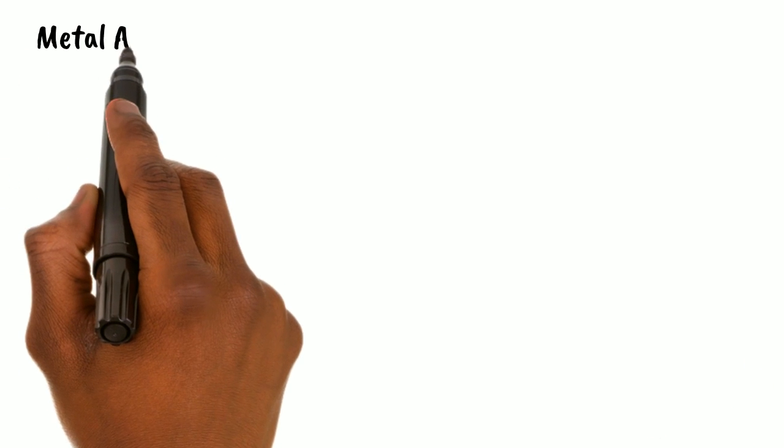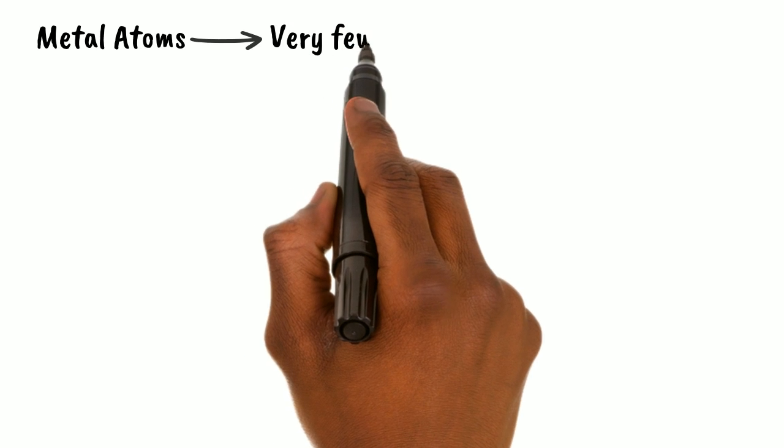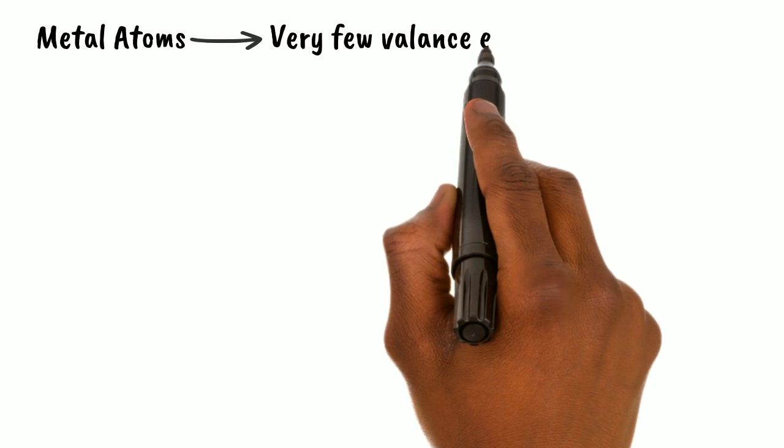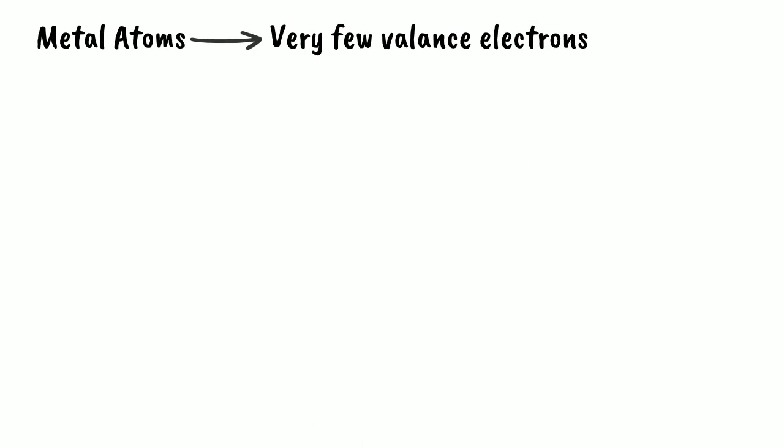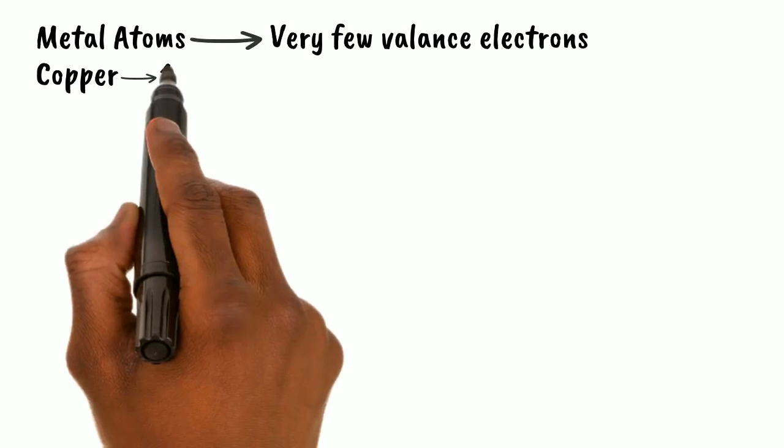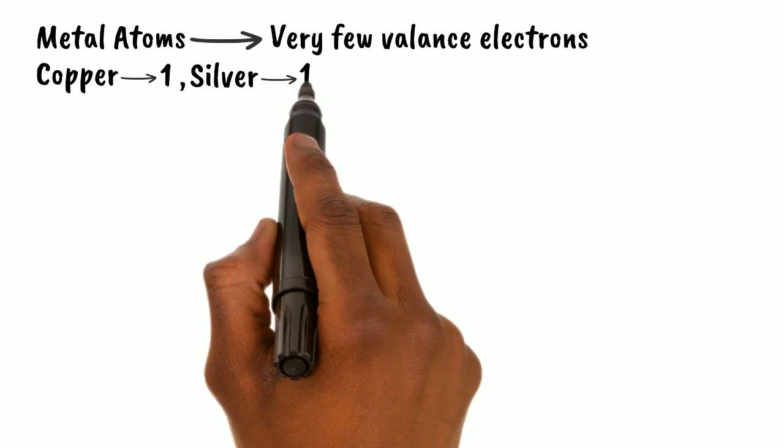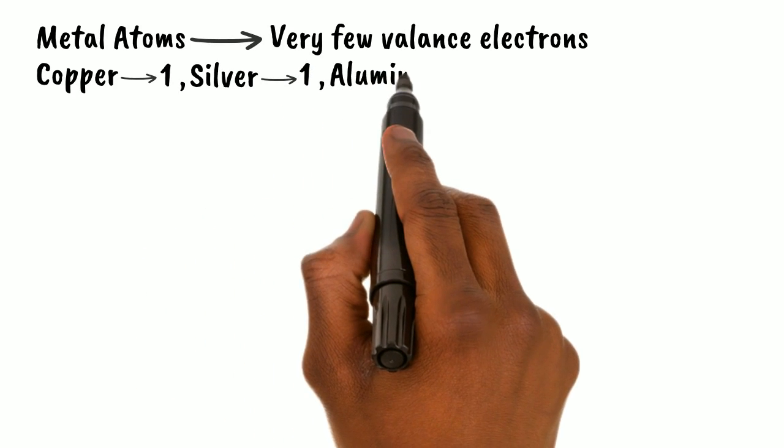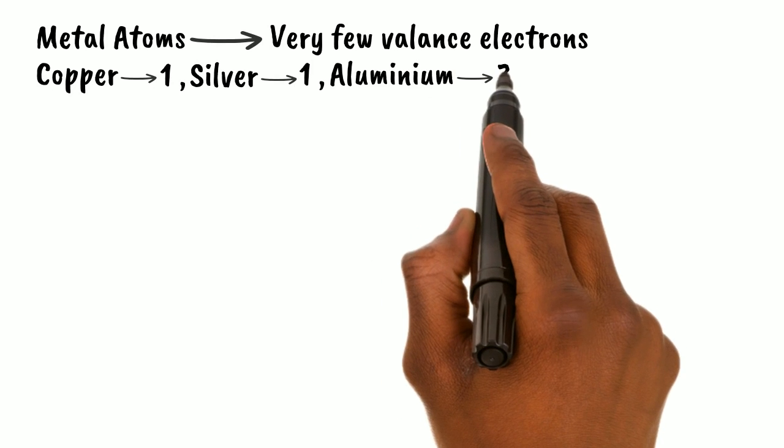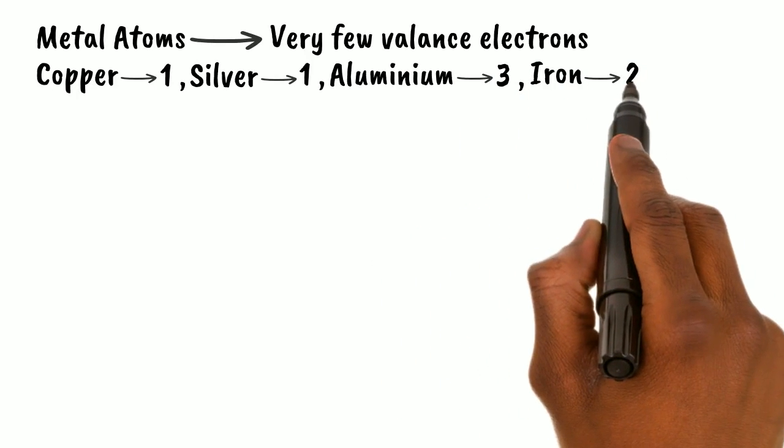Metal atoms have very few valence electrons. Such as copper has only one valence electron, silver has only one valence electron, aluminum has only three valence electrons, iron has only two valence electrons, etc.